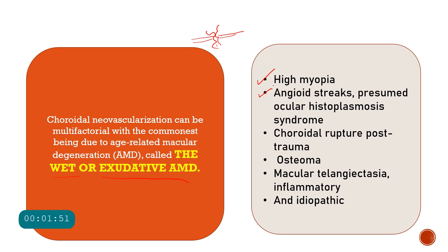Similarly, the presence of angioid streaks causes a break in the RPE-Bruch's complex. Presumed ocular histoplasmosis syndrome can also be associated with a CNVM. Choroidal rupture, as the name suggests, involves rupture post-trauma. Osteoma sometimes can also be associated with choroidal neovascular membrane. Then there are other inflammatory causes, macular ectasias, and other idiopathic causes of CNVM.